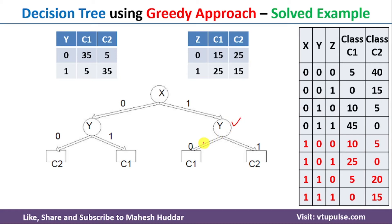On the right side, we again have Y equal to 0 on the left and Y equal to 1 on the right. When Y equal to 0, the correct classification is 35, which is with respect to C1. Between the other pair, 35 is the correct classification with respect to C2. This is how the decision tree looks with X as the root node.